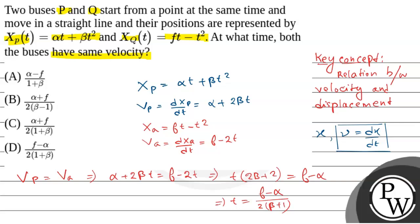That is the value of time when the two buses will have the same velocity. So our answer t = (f - α) / (2(1 + β)) is the time when both buses will have the same velocity. Hope you understand it. Best of luck.